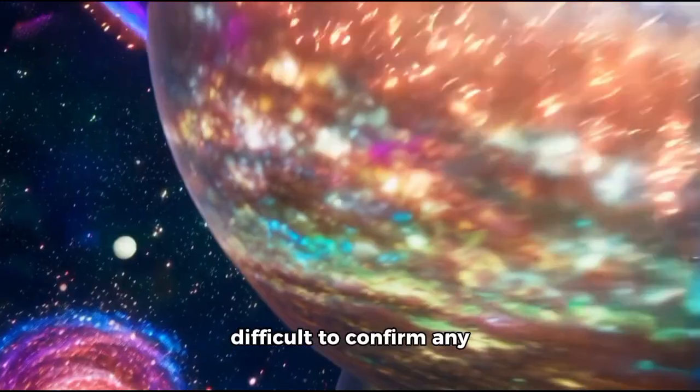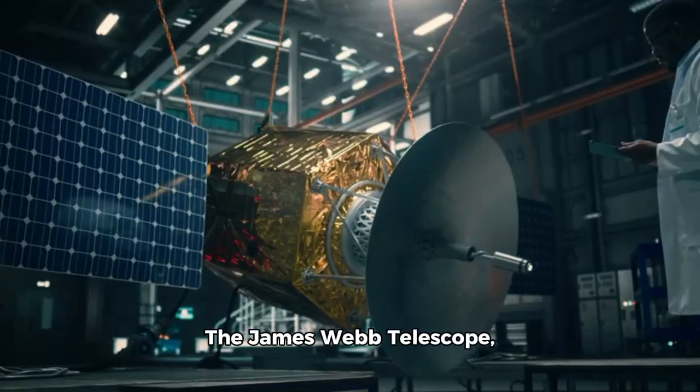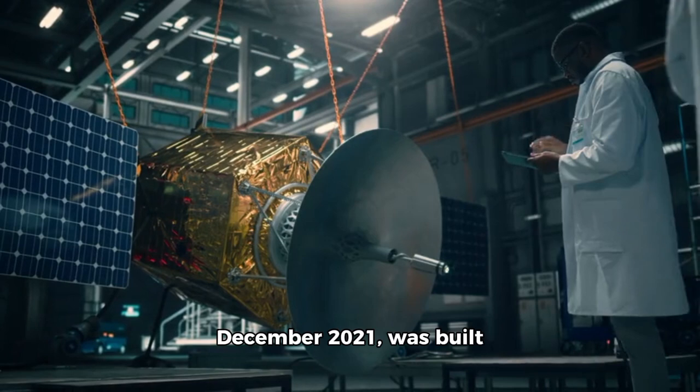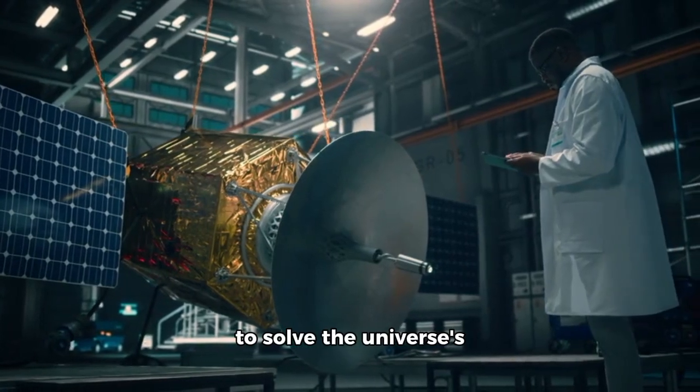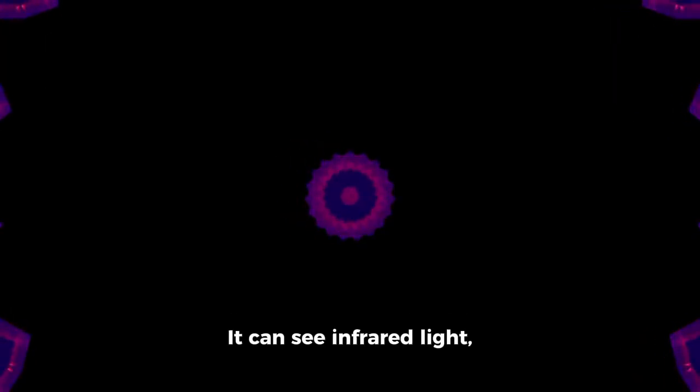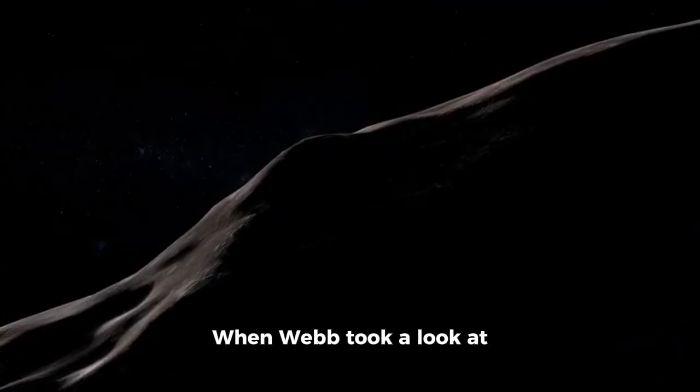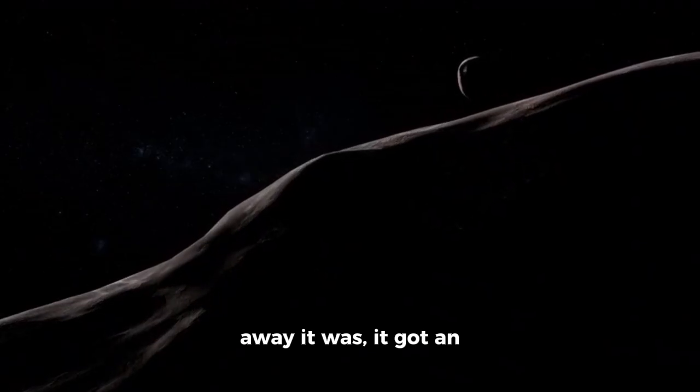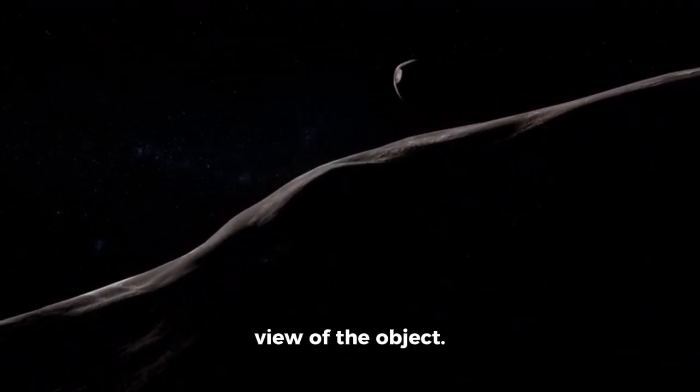The James Webb Telescope, which went online in December 2021, was built to solve the universe's biggest puzzles. It can see infrared light, letting it capture details that other telescopes can't. When Webb took a look at 'Oumuamua and how far away it was, it got an amazing first-person view of the object.